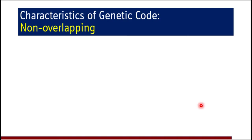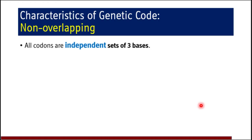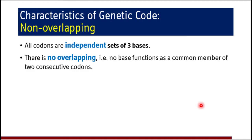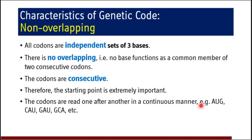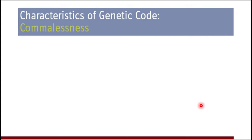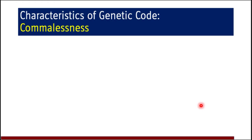The next property is the non-overlapping nature of the genetic code. All codons are independent sets of three bases and there is no overlapping — no base functions as a common member of two consecutive codons. After a set of three nucleotides, there will be another set of three nucleotides. The starting point is extremely important because codons are read one after the other in a continuous manner. If any nucleotide is deleted or inserted, it will completely change all codons after the point of mutation.